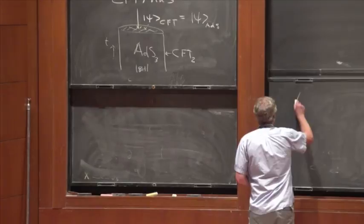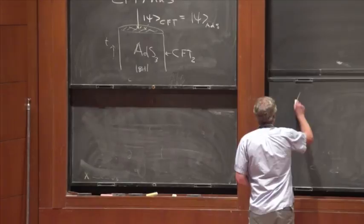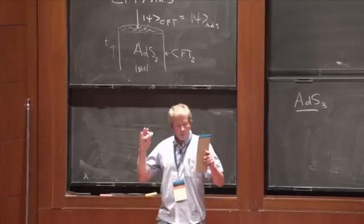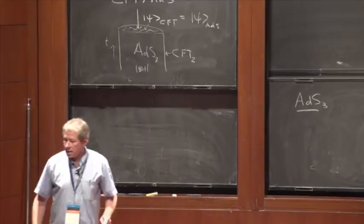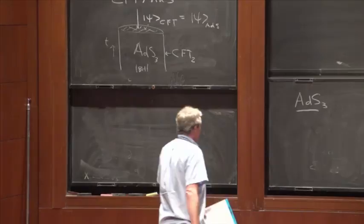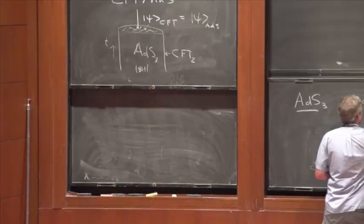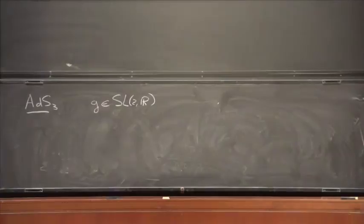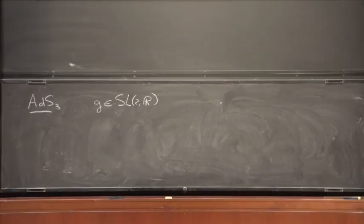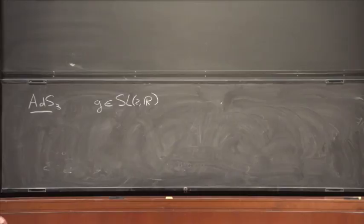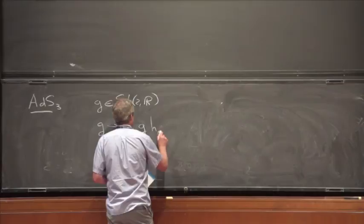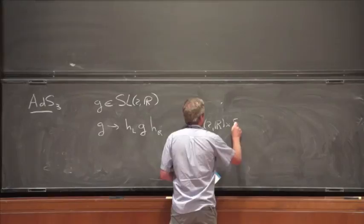ADS-3 is basically the SL(2,R) group manifold. I can parameterize ADS-3 by a group element in SL(2,R). The isometries are SL(2,R) times SL(2,R), the Poincaré group of ADS-3, because I can act on the left or right with an SL(2,R) element. So SL(2,R) times SL(2,R) is the isometry group of ADS-3.